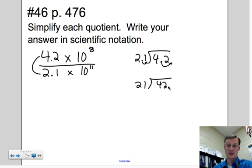Don't forget that the decimal is to the right, and go ahead and put it up as well. 21 goes into 42, 2 times. 2 times 21 is 42, and that gives me 0. So I stop. So this is 2. So 4.2 divided by 2.1 is 2.